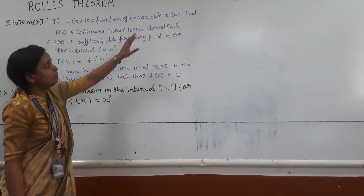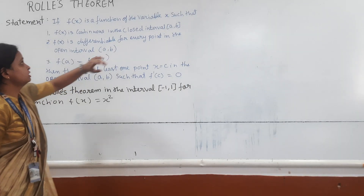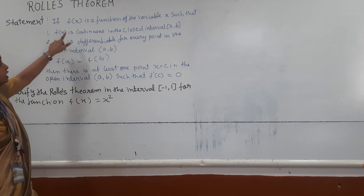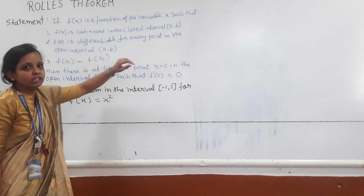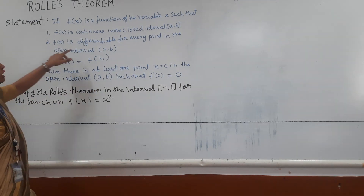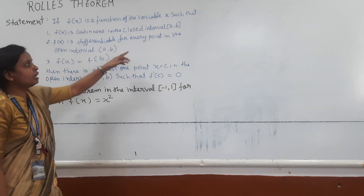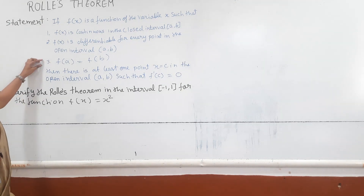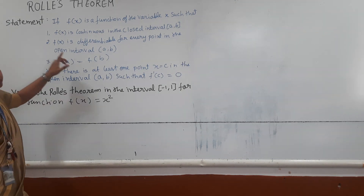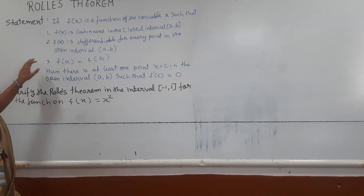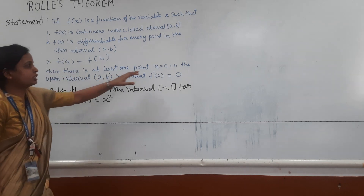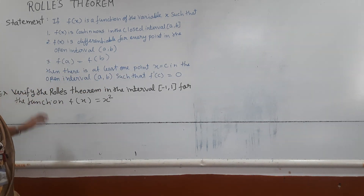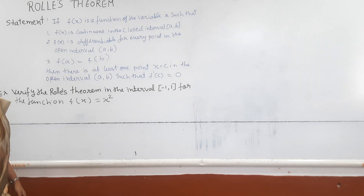If f(x) is a function of the variable x, the conditions are: first, f(x) is continuous in the closed interval [a, b]; second, f(x) is differentiable for every point in the open interval (a, b); and third, f(a) is equal to f(b). Then there exists at least one point c in the open interval (a, b) such that f'(c) is equal to 0.